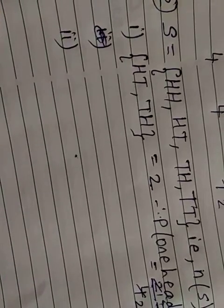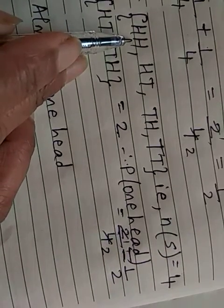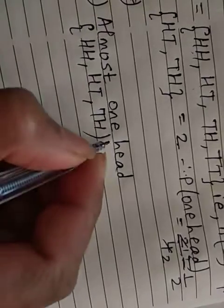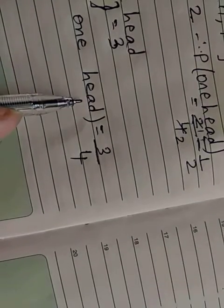Now the second question asks for the probability of getting at most one head. At most one head means one head or fewer. Looking at the sample space: HT — yes, TH — yes, HH — yes... wait, TT — yes (zero heads is also at most one). The favorable outcomes are {HT, TH, TT}, which equals three. Therefore, the probability of getting at most one head is equal to three divided by four, that is 3/4.